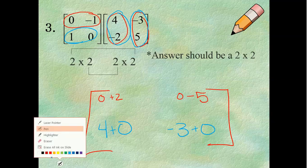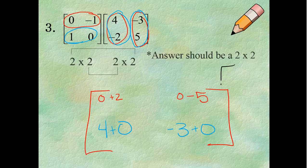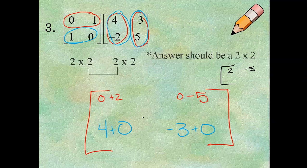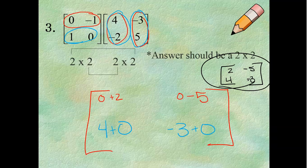So, my final answer for this matrix should be 0 plus 2 is 2. So, 2, negative 5, 4, and negative 3. Final answer. And that's the end of this video. See you later, Sabers!